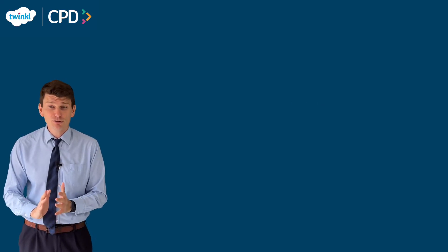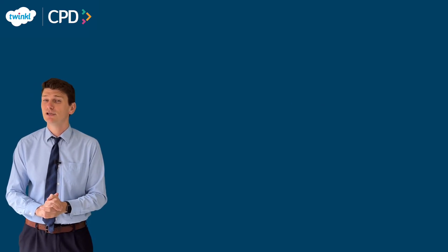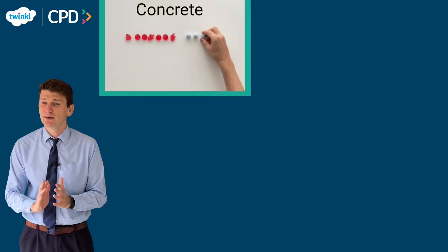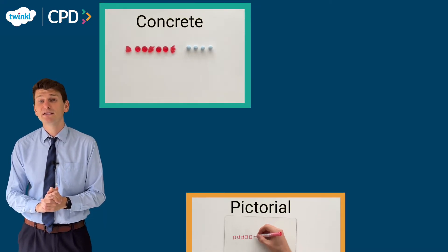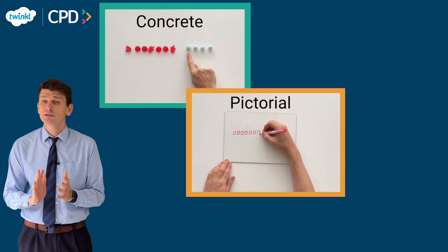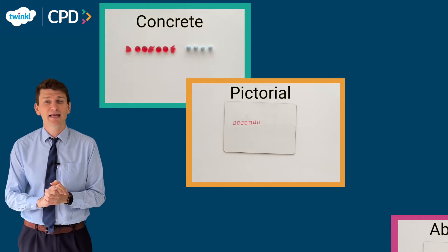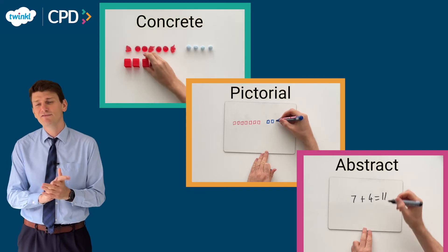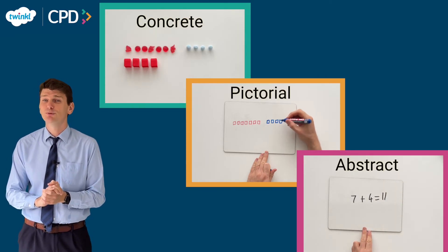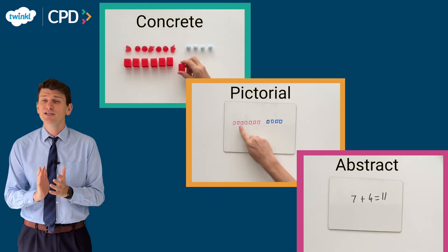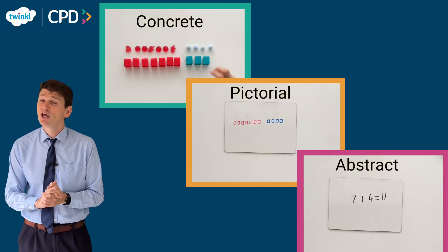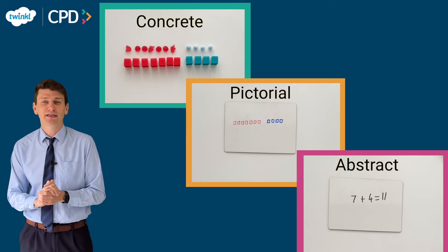The concrete and pictorial representations are there to help children understand the abstract mathematics. It's a good idea to show concrete, pictorial and abstract representations side-by-side so that children can begin to make links between them. The ultimate goal is for children to be able to access the abstract stage of learning. The more opportunities they have to make links between the different representations, the easier this will be. Educators familiar with the approach will understand when to move back and forth between the stages to reinforce learning and investigate concepts.